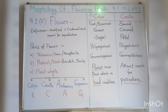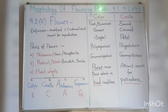When we say the word 'plant,' immediately an image is formed in our mind and we can visualize the different parts of the plant. As we know, plants are living organisms, and hence they show characteristics such as growth, development, and reproduction.